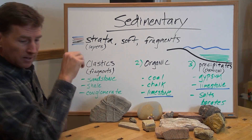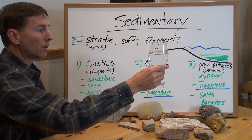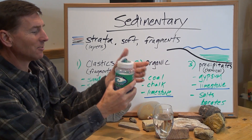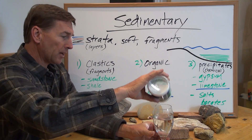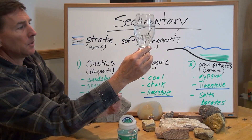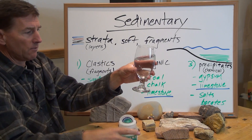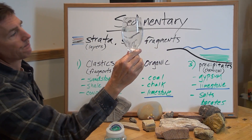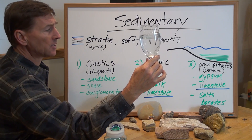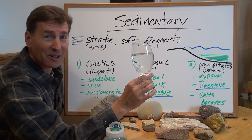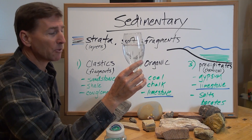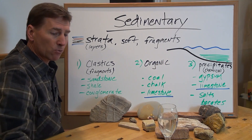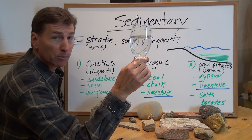Moving on to the precipitates — I brought a glass of water, still warm, and some pure ocean salt. I'll pour that in here. What do you think is going to happen? It kind of falls to the bottom. If I swish the glass around, eventually it would dissolve. But there comes a point where the water is supersaturated — you can only put so much salt in there — and guess what? It's going to precipitate out. Hence the name: the precipitates.